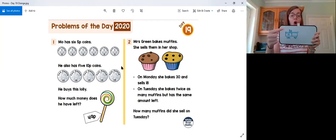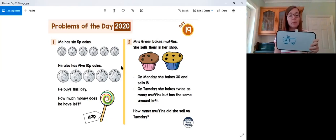So if we draw this out in our bar model to help us picture it, she bakes 30, she sells 18. How many are left? Well, we've got the whole, we've got one part. It's a difference question. 30 take away 18. I'm going to use the counting on method because I find it easier to do in my head. So 18 plus two gets me to 20, plus 10 gets me to 30. She has 12 muffins left.